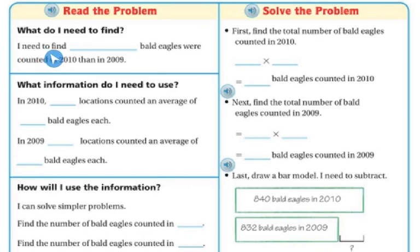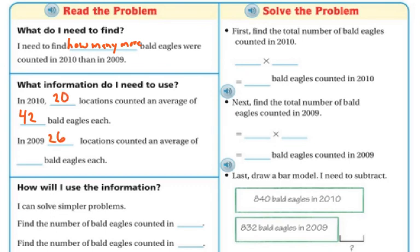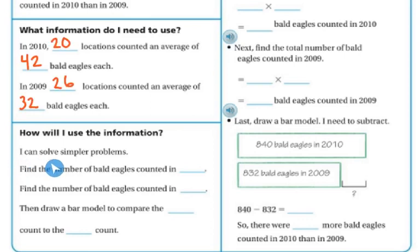So what do I need to find out? I need to find how many more bald eagles were counted in 2010 than 2009. What information do I need to use? In 2010, there were 20 locations where they counted an average of 42 bald eagles. In 2009, they had 26 locations and counted an average of 32 bald eagles. So I can solve simpler problems: first find the number of bald eagles counted in 2010, then find the number counted in 2009, and then draw a bar to compare them.